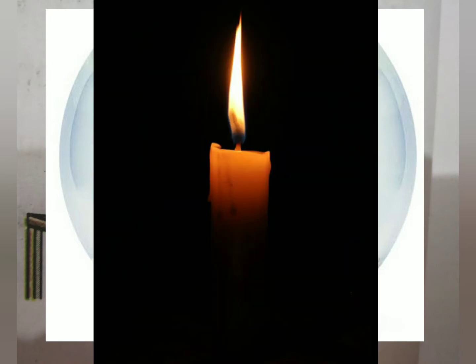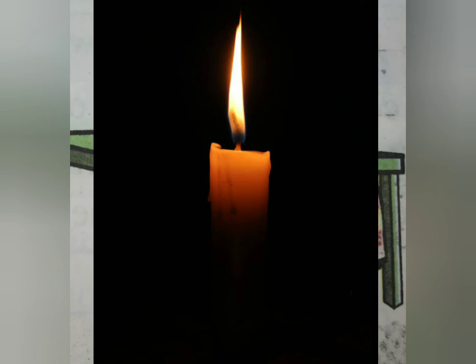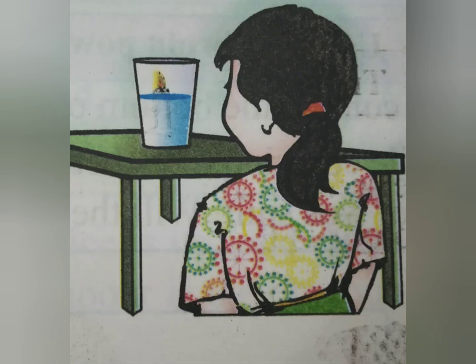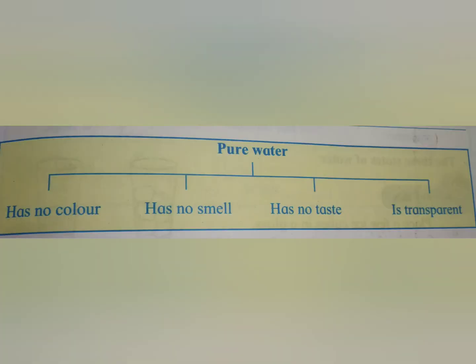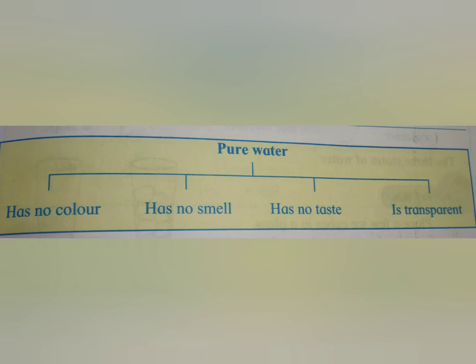Now look at the candle through a glass of water — what do you find? The candle can be seen through the water in the glass as well. What does this mean? Water too is transparent. So, let's review the points we have seen: pure water has no colour, has no smell, has no taste, and is transparent. Pure water has no colour. Pure water has no smell. Pure water has no taste. And pure water is transparent. You have to remember these points.